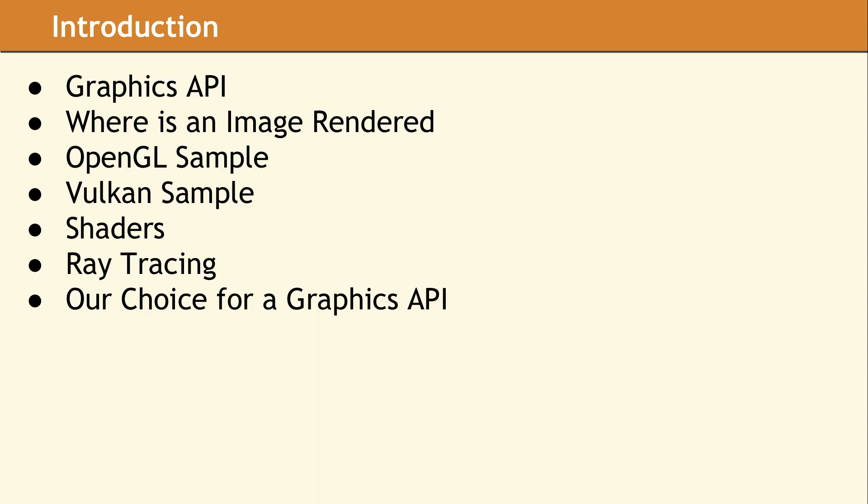When we talk about a Graphics API, it is important to distinguish between the API specification and the actual library. There are usually multiple layers below the API, and the decision of which physical library and graphics driver to call is not defined by the user of the Graphics API. The path to the physical graphics card is based on the platform, drivers, and who implemented the API.